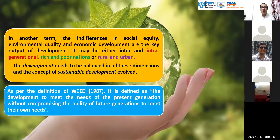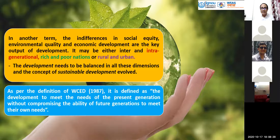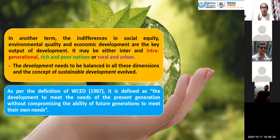As per the definition of WCED — World Commission on Environment and Development in 1987 — sustainable development is defined as development that meets the needs of the present generation without compromising the ability of future generations to meet their own needs. This definition has some critics and some advantages and disadvantages, but it is important in understanding the issues of sustainability through a global common effort.